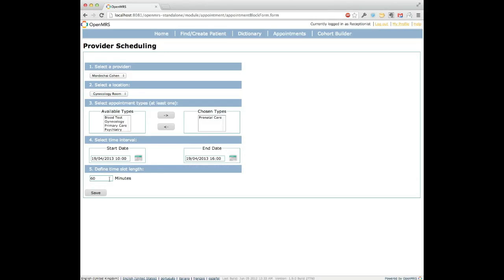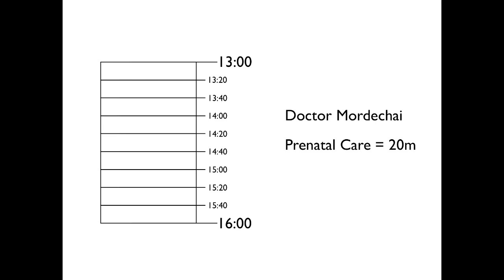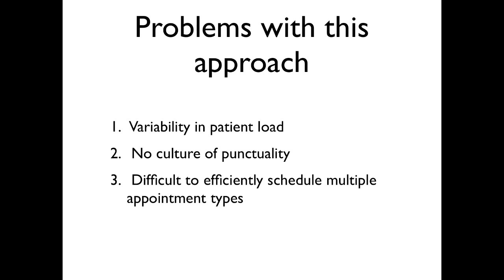The last thing to define is the slot length. To understand what slot length is, you need to understand how the scheduling algorithm works. This diagram depicts what most people think of when talking about appointments — a doctor scheduled for a particular time, and you tell the patient to come precisely at 2 o'clock. The problem is this approach wasn't successful in our implementation because we have a huge amount of variability in patient load and complexity: sometimes a patient is very complex and takes longer than anticipated, other times they finish well under the predicted time.